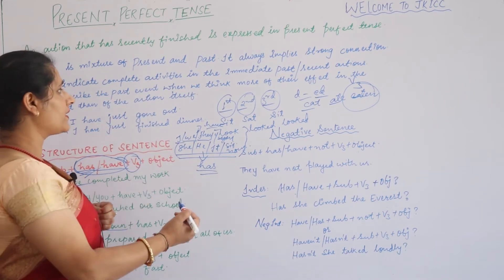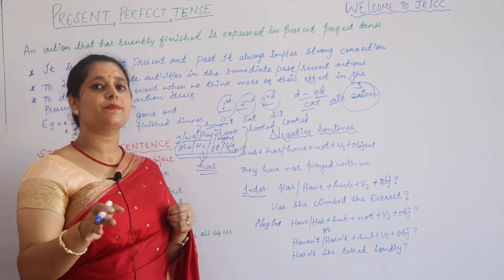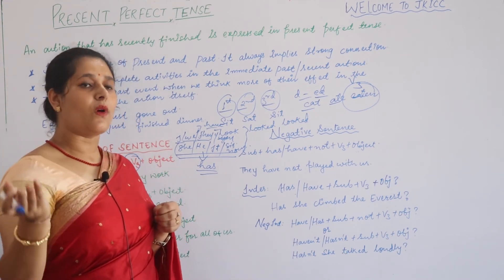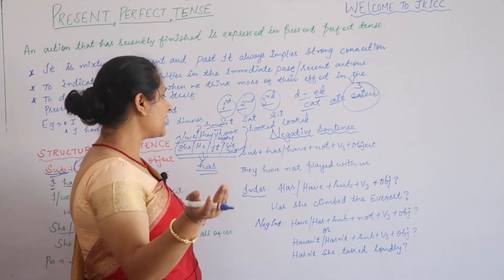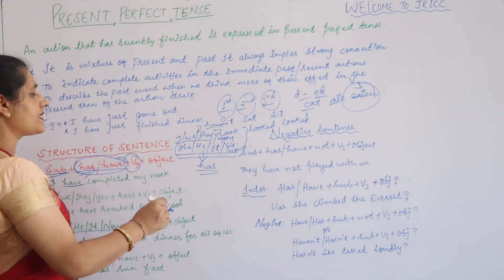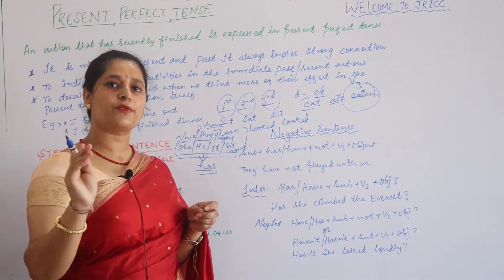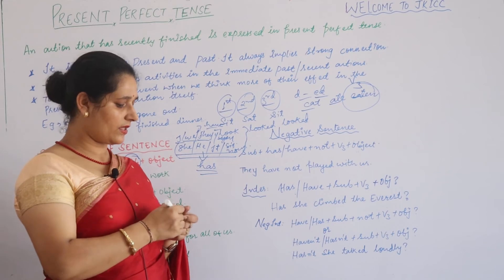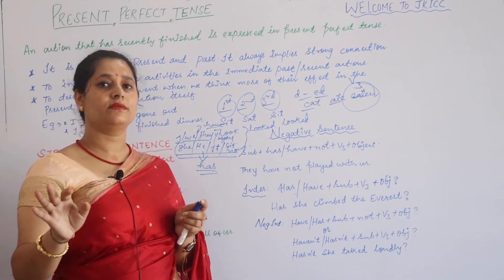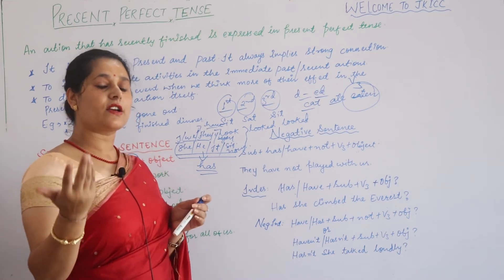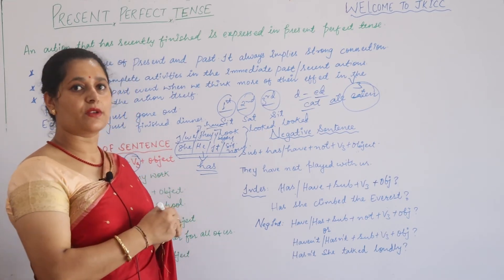This is done. Now we will do positive, negative, interrogative, and negative interrogative sentences. This is your positive sentence: subject plus has/have plus verb ki third form and object. Now if you want to make a negative sentence - woh nahi ho chuka hai, woh nahi kar chuka hai - how will you say that in English?